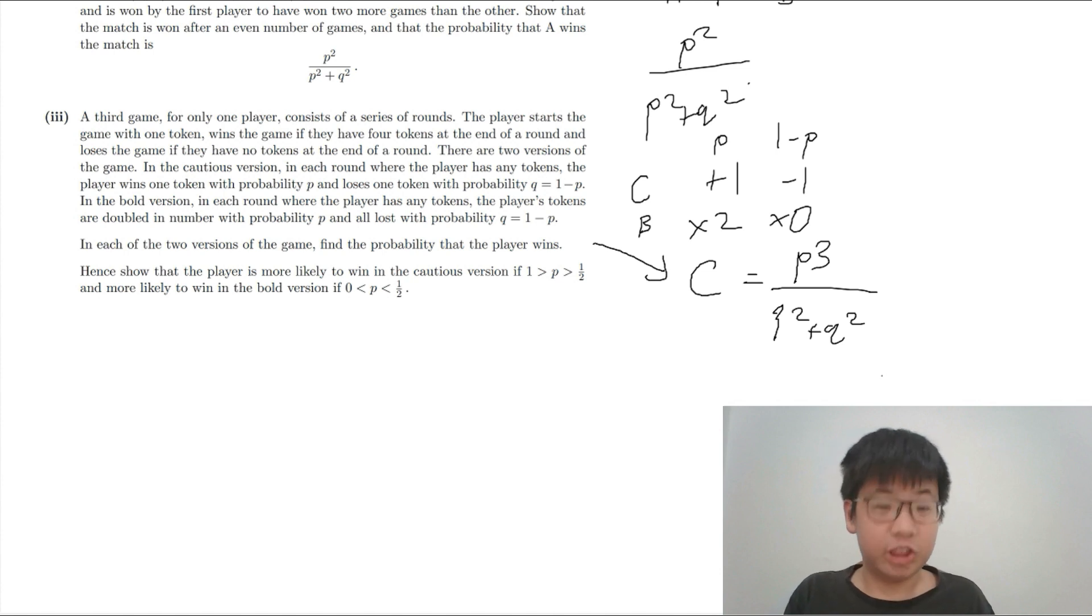And now, the bold version is actually quite much easier to calculate without having to worry about game equivalence or isomorphism. But, the only way for the player to win is by winning 2 rounds in a row, so probability P squared.